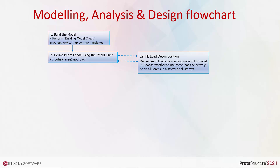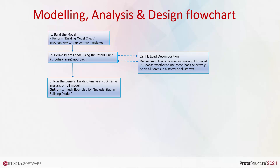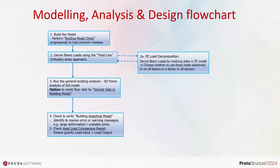This method derives beam loads by meshing the slabs in the FE model, and is able to capture the localized effect of slab openings and concentrated slab loads such as slab line loads. You can choose whether to use this method on selected or all beams in selected stories or for the whole model. The general building analysis can be run to generate the column, wall, and beam design forces. By default, floor slabs are not meshed in building analysis, but there is an option to mesh slabs of all or selected stories. After building analysis is successfully completed, ensure you check and verify the analytical model. You must identify any error or warning messages such as large deformation or unstable joints. Check that the deflection and member forces are reasonable, and check the axial load comparison report to ensure no gravity load is lost.